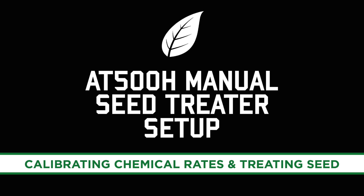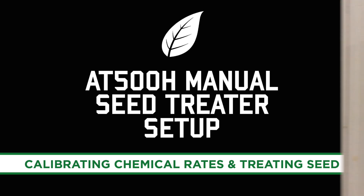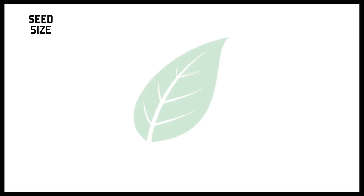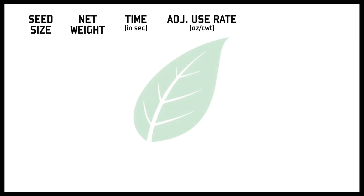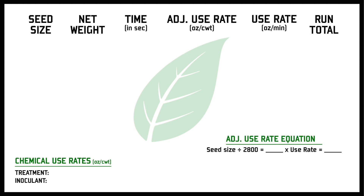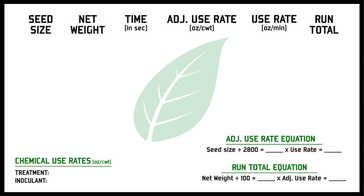Once your pump stands are set up and calibrated, it's time to do a little math. Using your whiteboard, write down seed size, net weight, time in seconds, adjusted use rate and ounces per hundred weight, use rate and ounces per minute, and run total. Also mark down your chemical use rates and the equations to get your adjusted use rates and run totals.